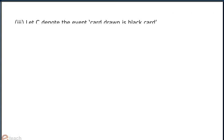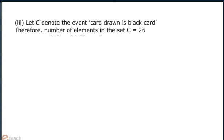3. Let C denote the event 'card drawn is a black card'. Therefore, the number of elements in set C is 26. So probability of C is 26 by 52, that is half.